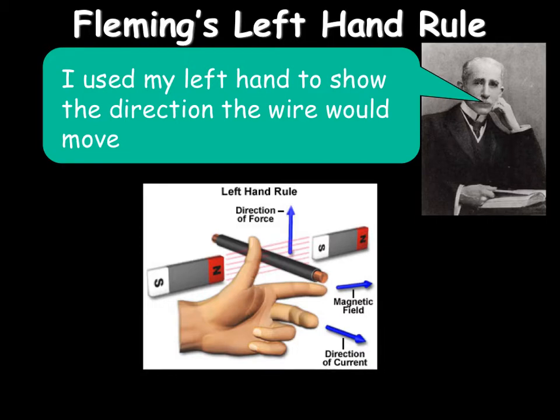You don't need to know what the different directions are, only that the left hand rule shows they're all perpendicular to each other. Mathematically, the size of the force is given by F equals BIL, where B is the magnetic field density measured in Tesla, I is the current in amps, and L is the length in meters.